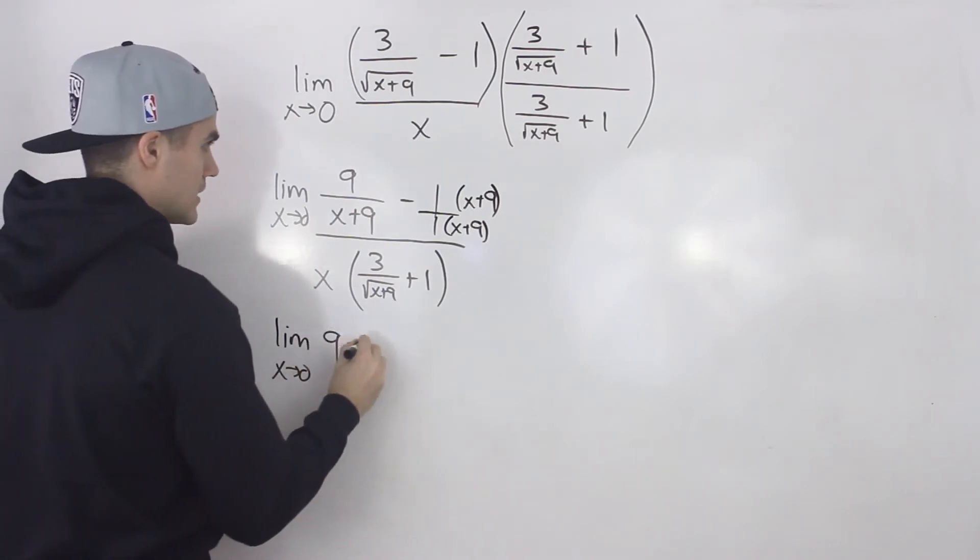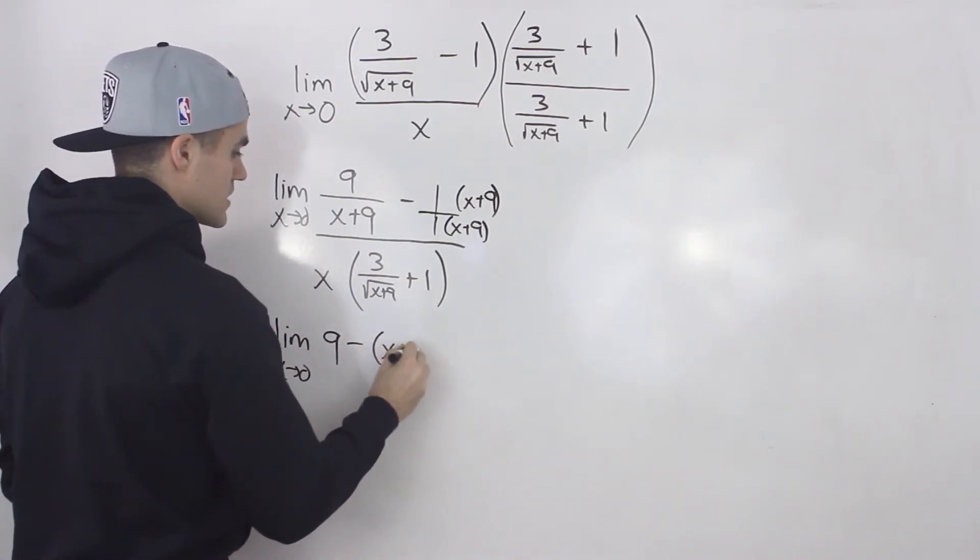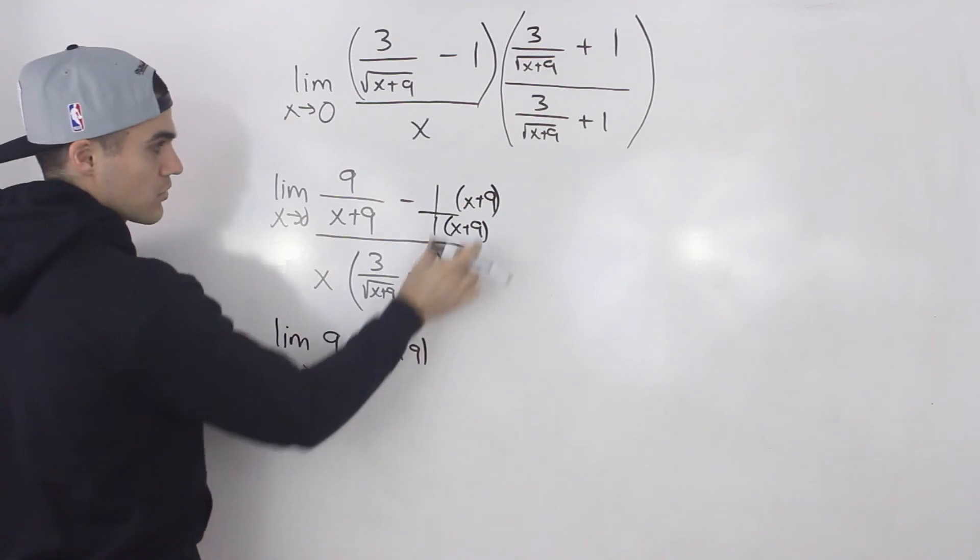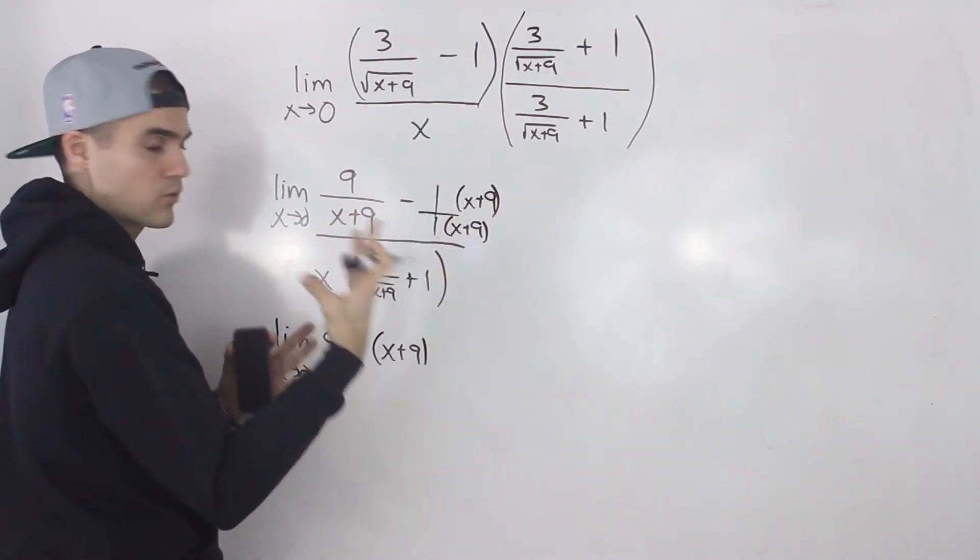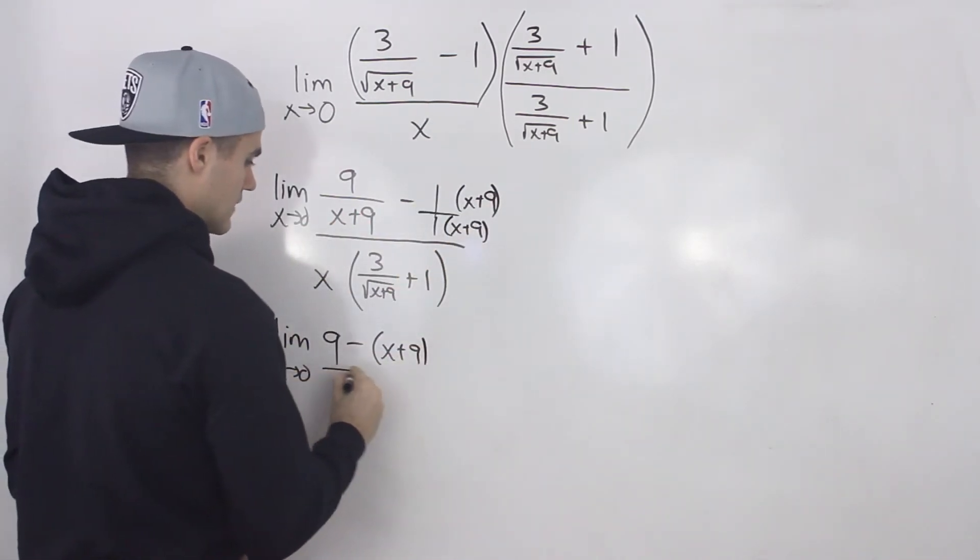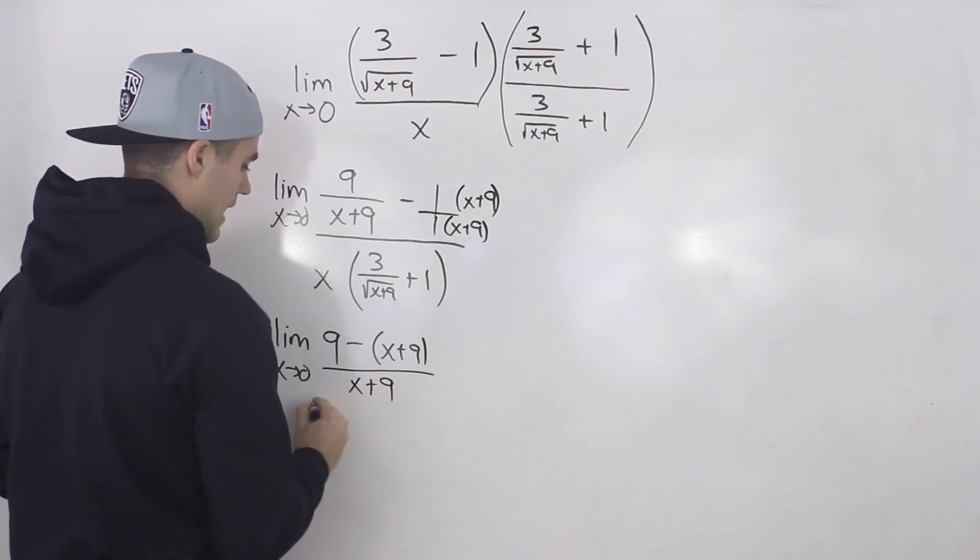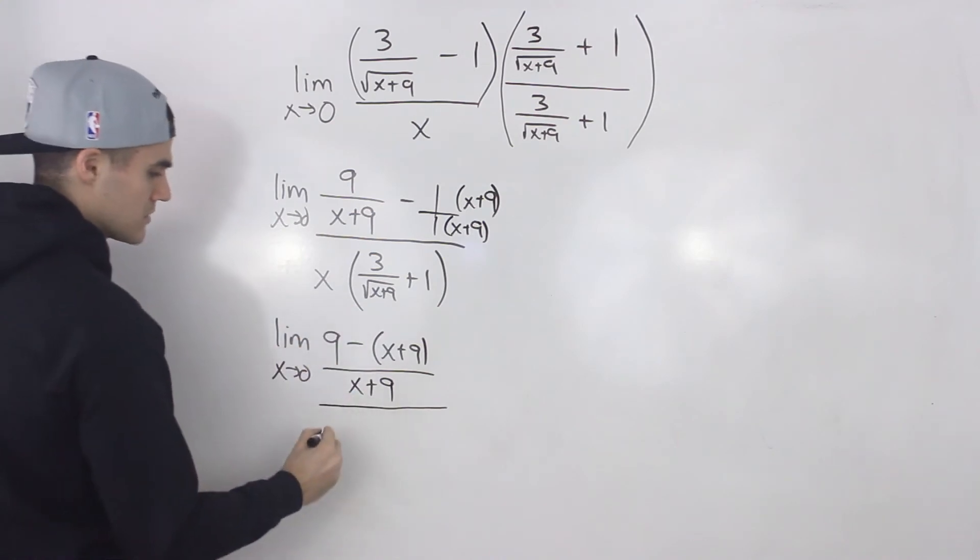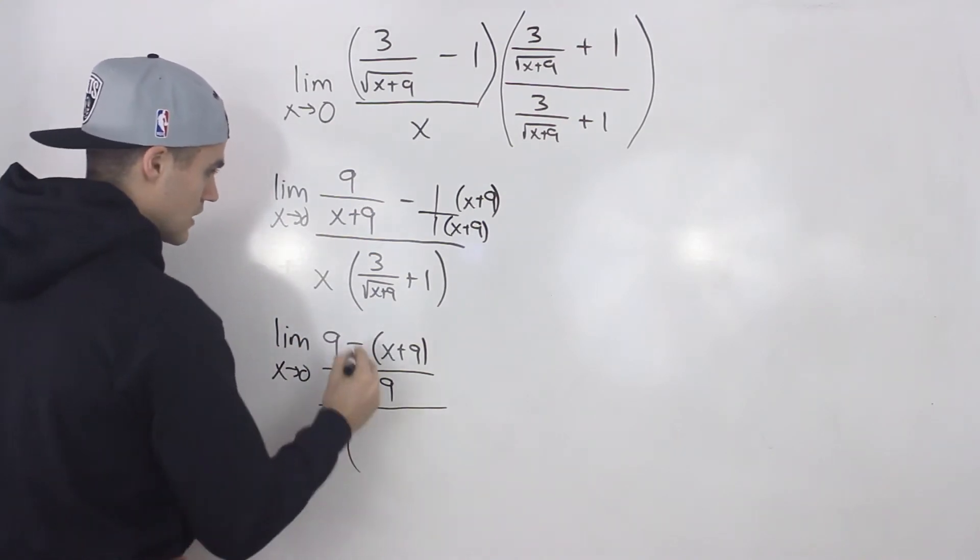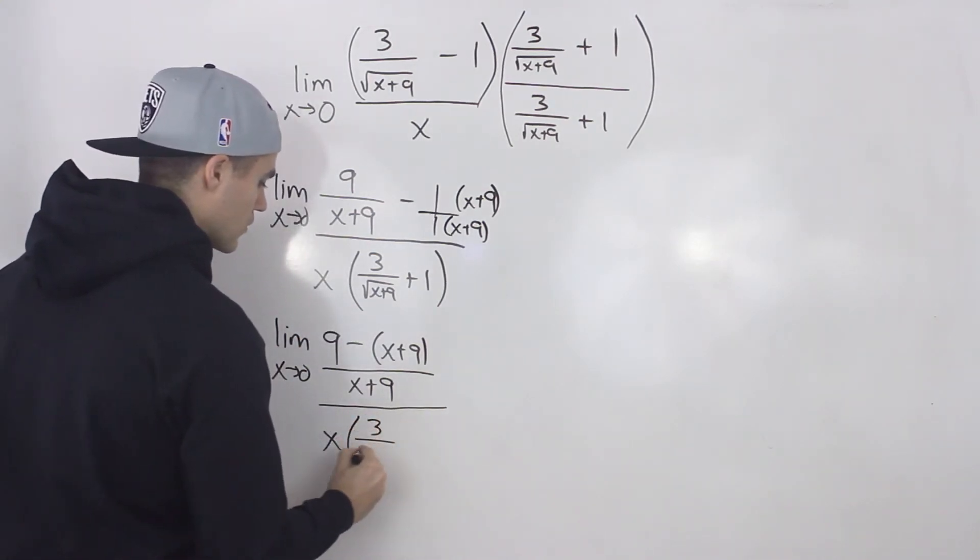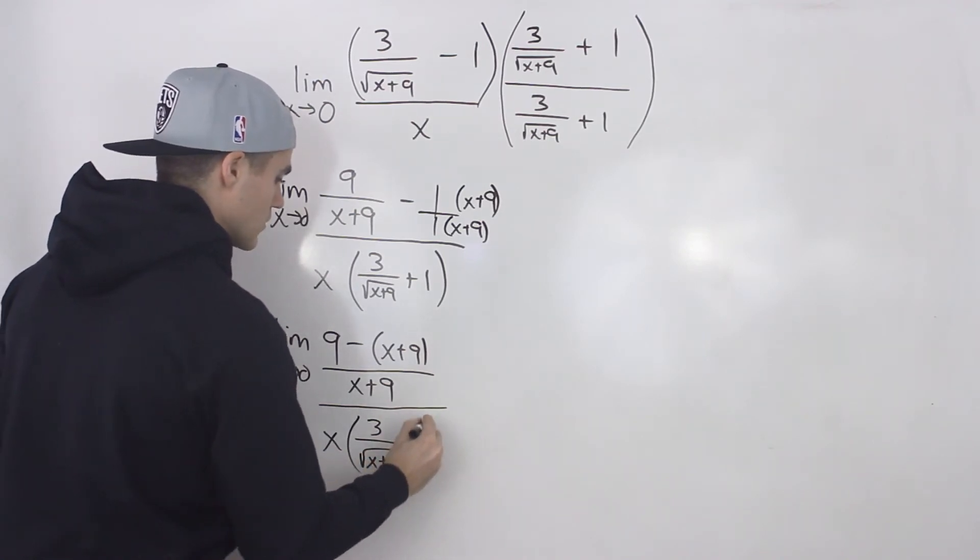So up top here, we'll basically end up with 9 minus in brackets x plus 9. Remember to put this in brackets here because you're subtracting that whole term. And then this is going to be all over x plus 9. And then that denominator is still going to be the same. We're going to have x here. And then we'll have 3 over the square root of x plus 9 plus 1.